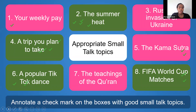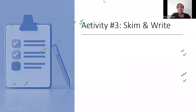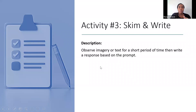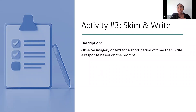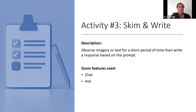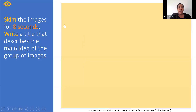Let's go to our third activity — this one is called Skim and Write. It's one I created because I wanted to focus on helping students develop fast reading skills. You can use this with either imagery or text. The students observe it for a short period of time, then write a response based on the prompt. Typically I use chat and poll, but chat is the only feature working today.